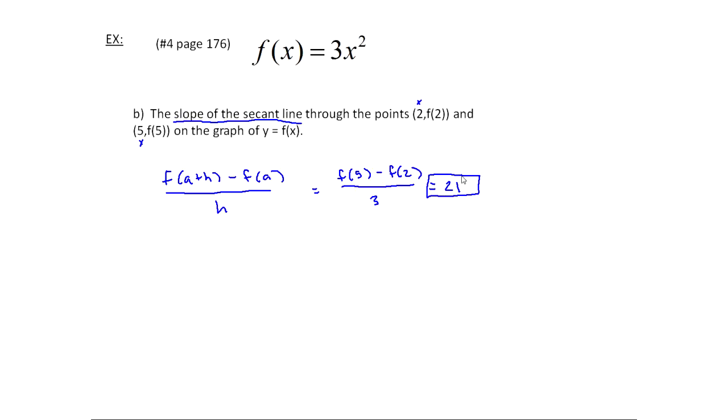And actually you didn't have to show anything here. If you were doing this problem, you'd just say, oh, this is the exact same thing as what I just found. So the slope of the secant line is the same as the average rate of change. The only thing is if the points had changed, if instead of 2 to 5 it was like 6 to 9, then we would have to do the formula again, but it would still be the same formula.